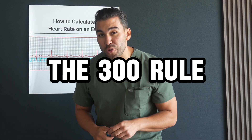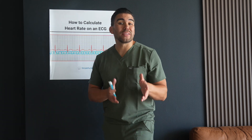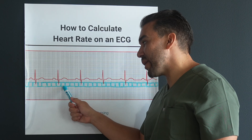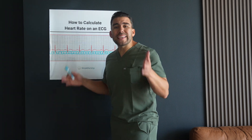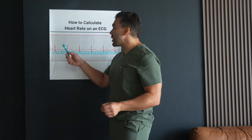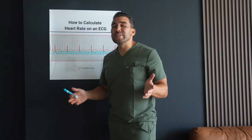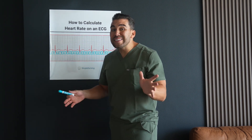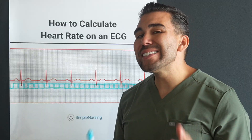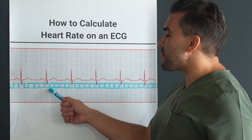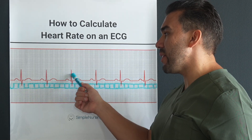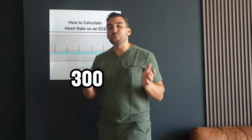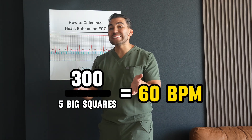Today we're going to explore three main methods to calculating the heart rate. Let's dive into the 300 rule — this is a quick way to estimate the heart rate for regular rhythms. You can see the clearly marked big squares in blue here. We simply count the number of big squares between two consecutive R waves and divide 300 by that number. In this example, there are about five boxes between the R peaks, so 300 divided by 5 is 60 beats per minute.